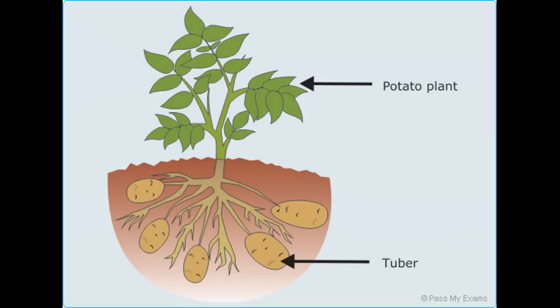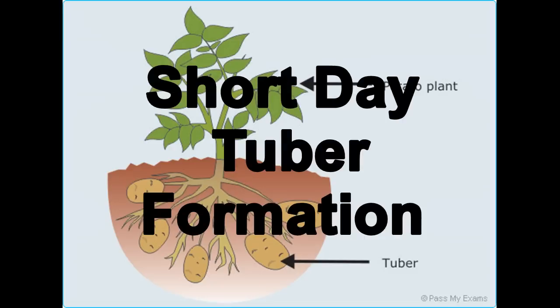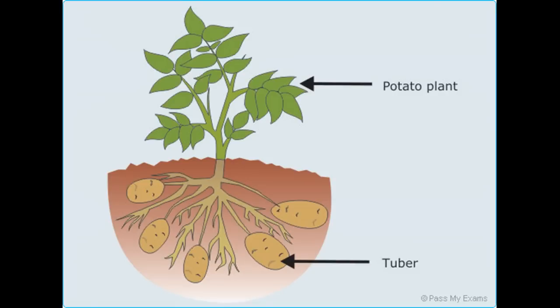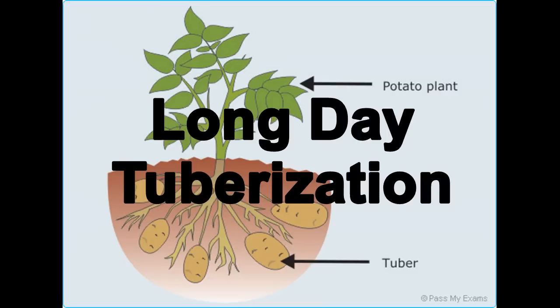The potato evolved short-day-dependent tuber formation as a propagation strategy in South America. Due to this, potatoes were short-day-dependent and would not make tubers in the long days of spring and summer in northern latitudes. From here, we were able to guess that one of the first selected traits allowing European potato cultivation is likely to have been long-day tuberization.